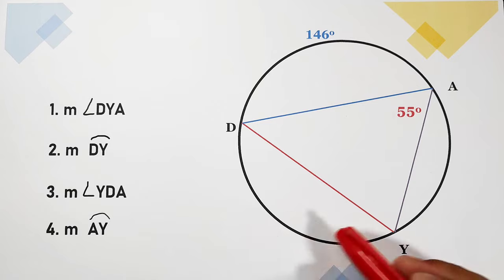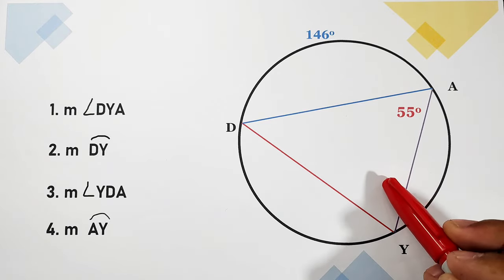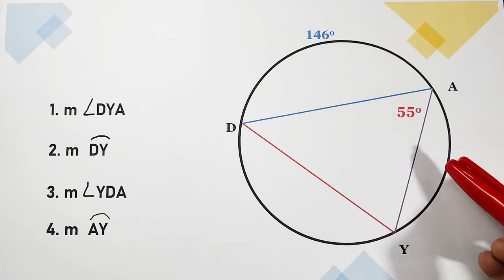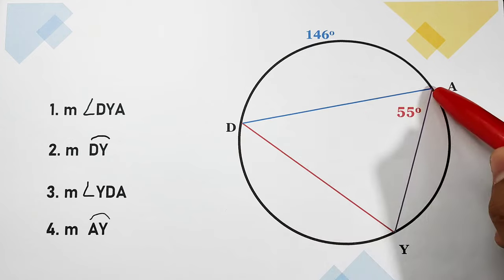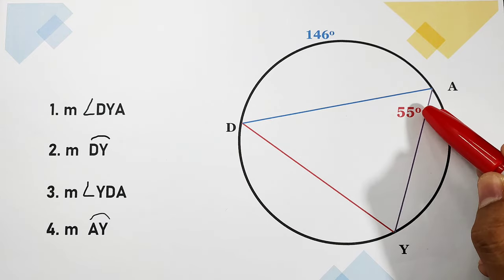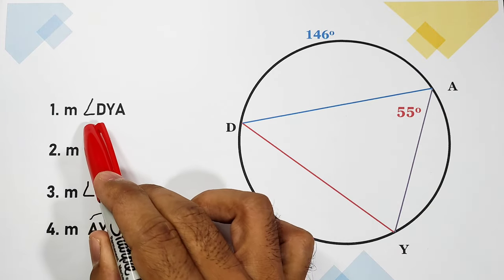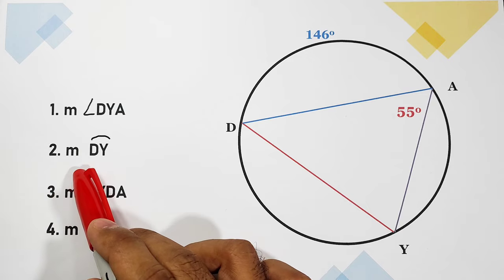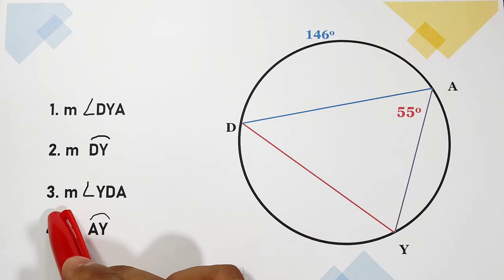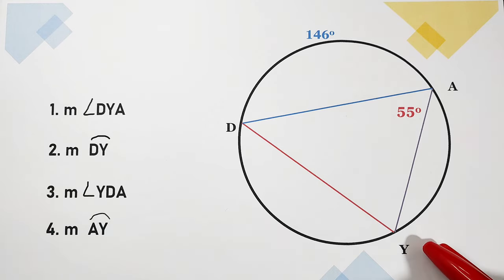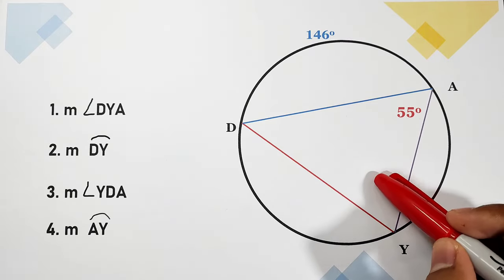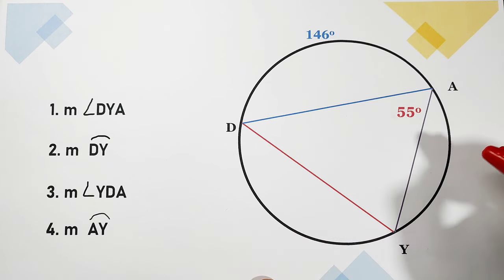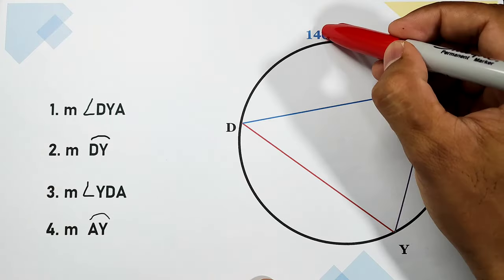Let us have another figure — we have a triangle inscribed inside a circle. The given measures are arc DA, which is 146 degrees, and angle DAY, which is 55 degrees. We are looking for: the measure of angle DYA, the measure of arc DY, the measure of angle YDA, and the measure of arc AY.